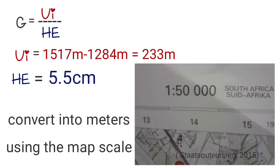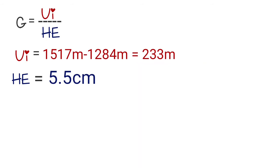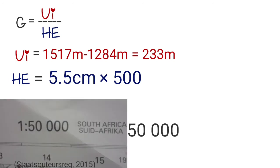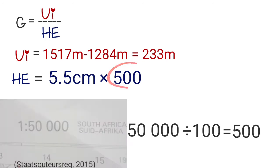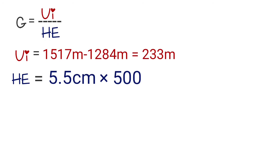Now that you have the measurement of 5.5 centimeters, you need to convert it into meters using the map scale. You say 5.5 centimeters multiplied by 500. We get 500 from the map scale: 50,000 divided by 100 gives you 500. So 5.5 centimeters times 500 gives you 2750 meters — that is your HE.